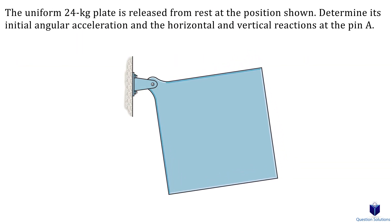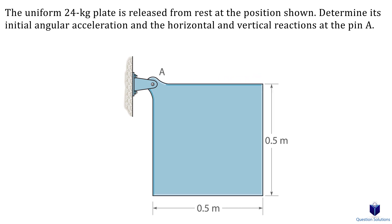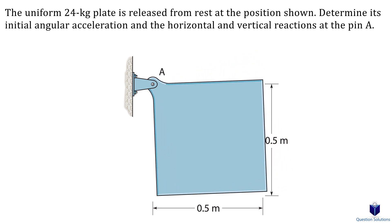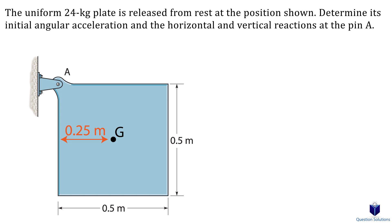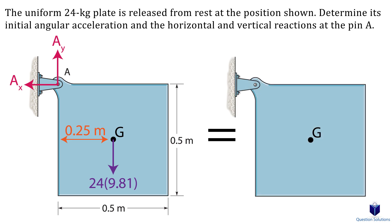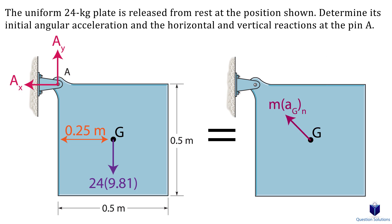Let's look at a problem where we need to find the initial angular acceleration and the reactions at pin A. When the square plate is released, it falls and turns clockwise. We draw a free body diagram along with the kinetic diagram. The center of mass is at the center of the uniform square plate. At the center we have the weight, and at the pin we have reactions Ax and Ay. In the kinetic diagram, the acceleration at the center of mass has normal and tangential components, each multiplied by the plate's mass, plus a moment about the center of mass.